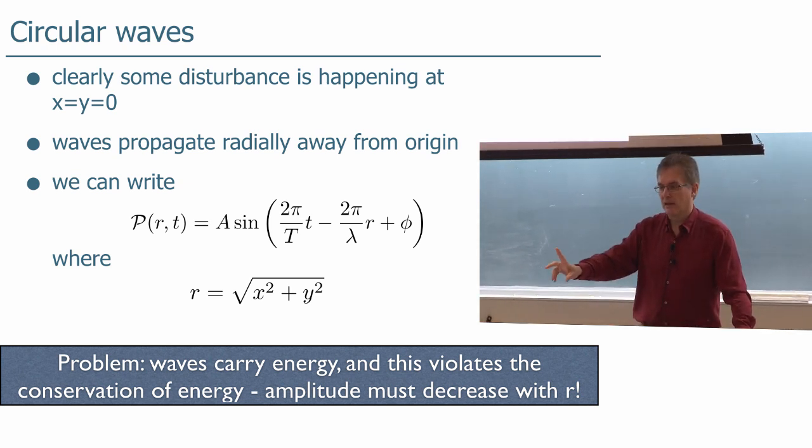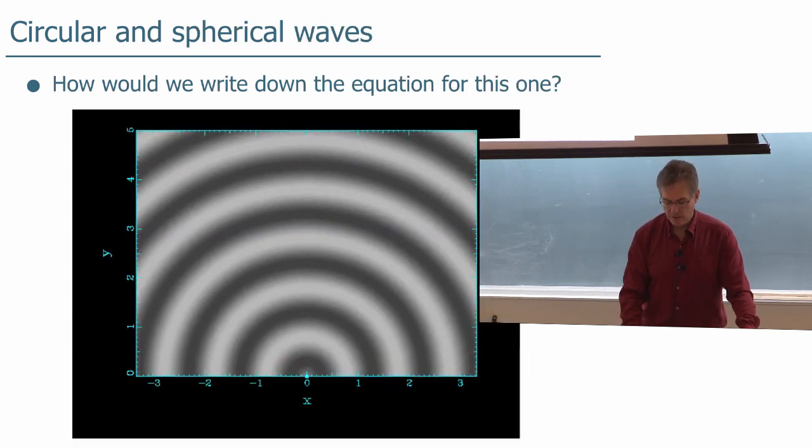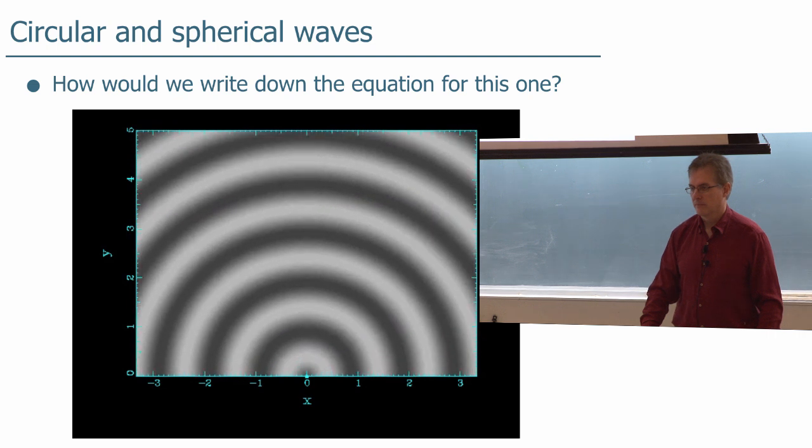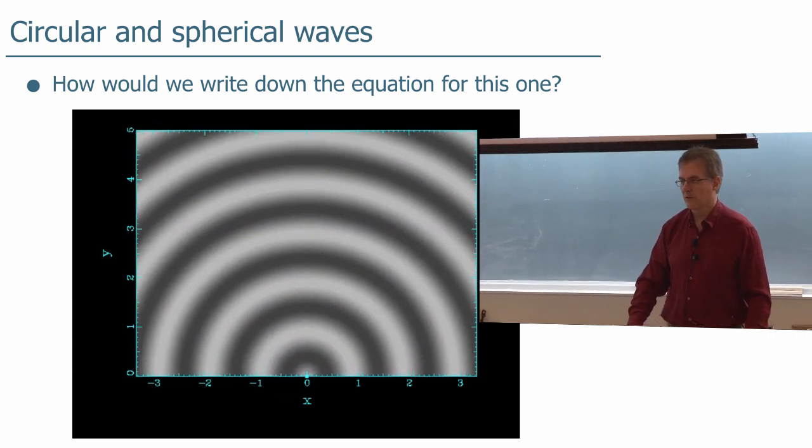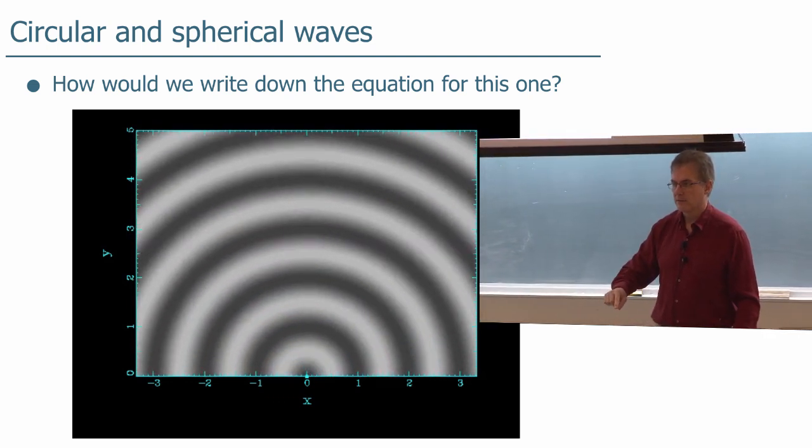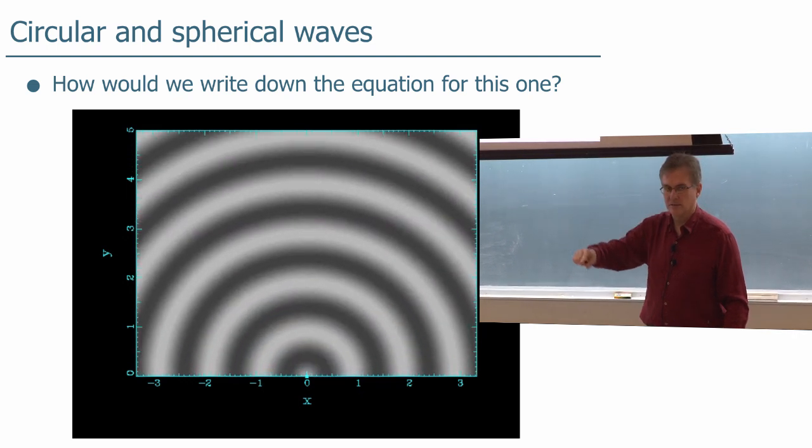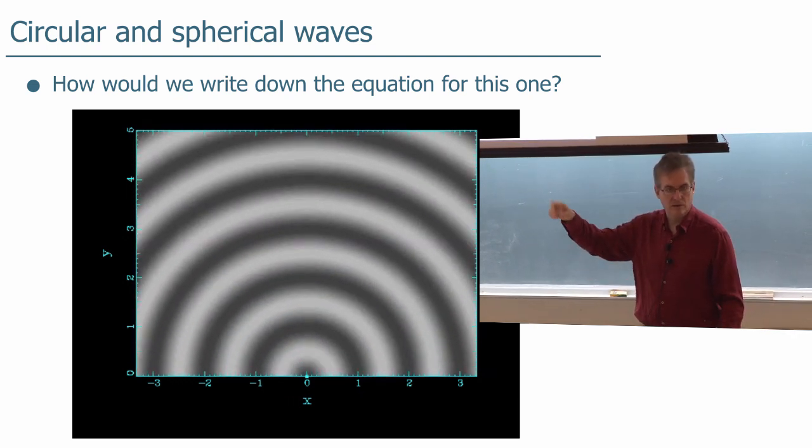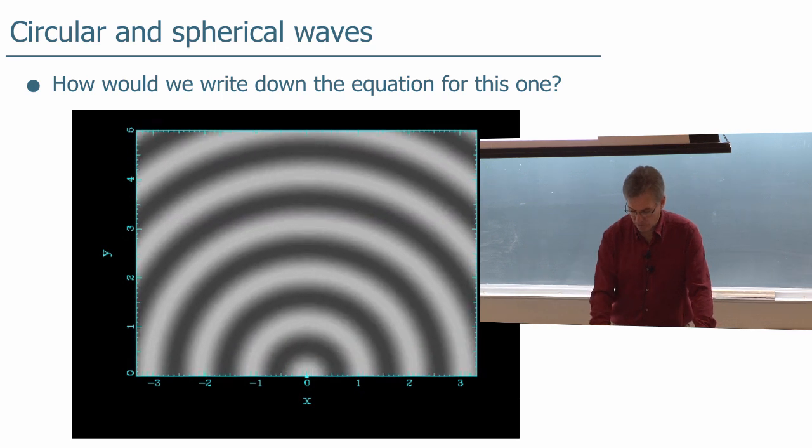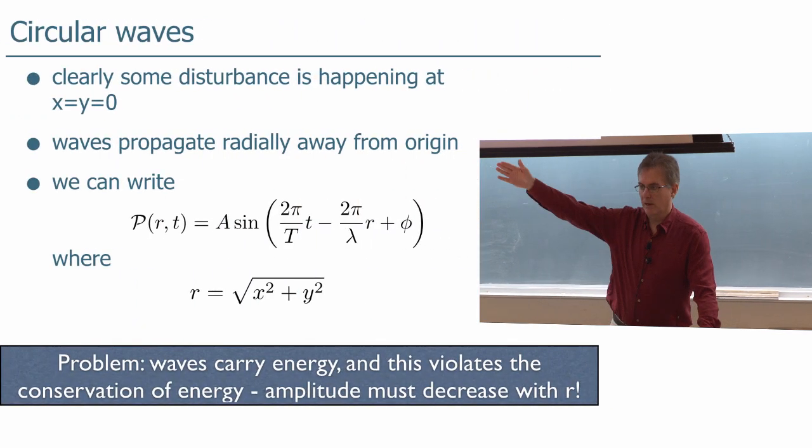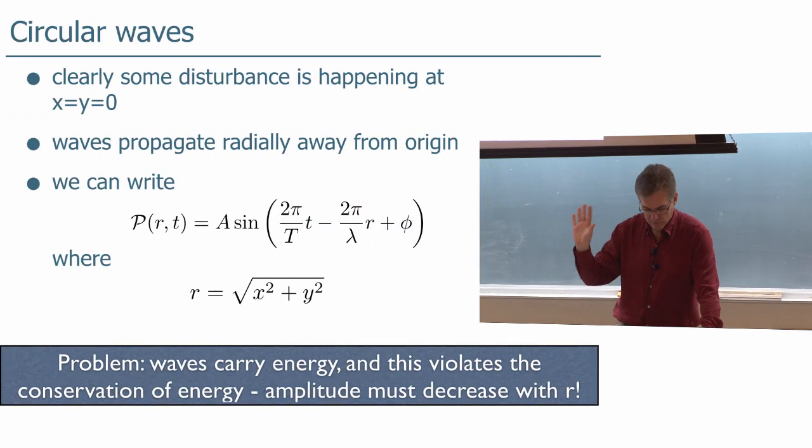I would say that this equation certainly describes what we see in this animation. It looks like the amplitude of this wave is the same at large radius and at small radius. That's what this equation is saying - no matter what radius you're at, you have the same amplitude.